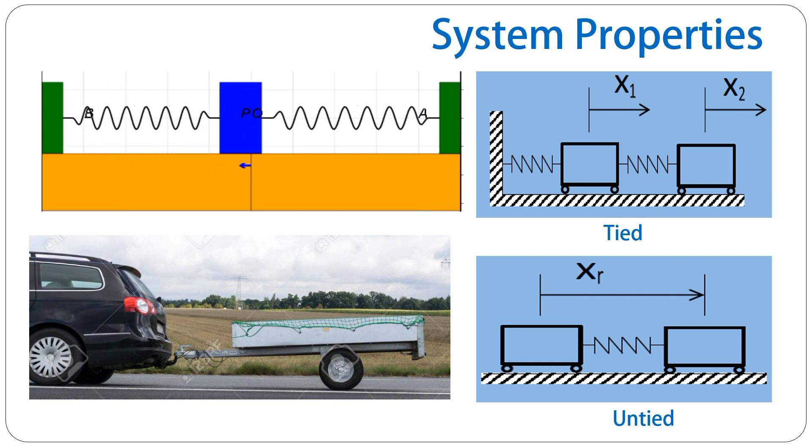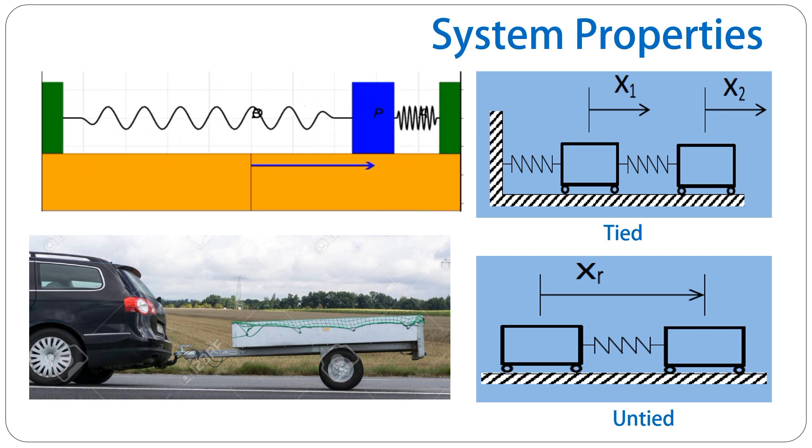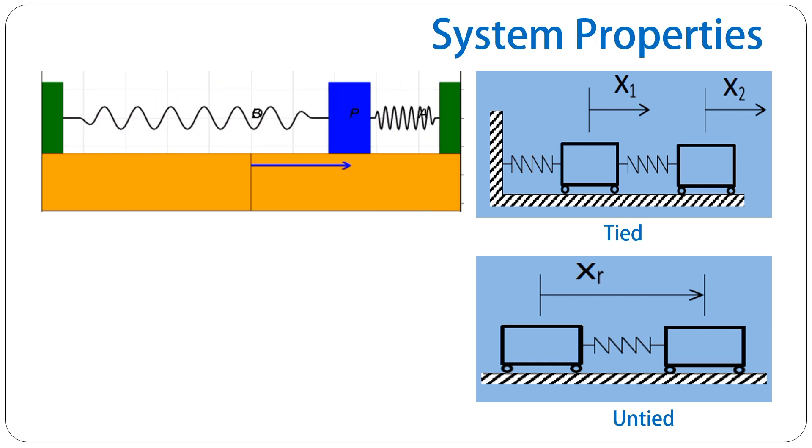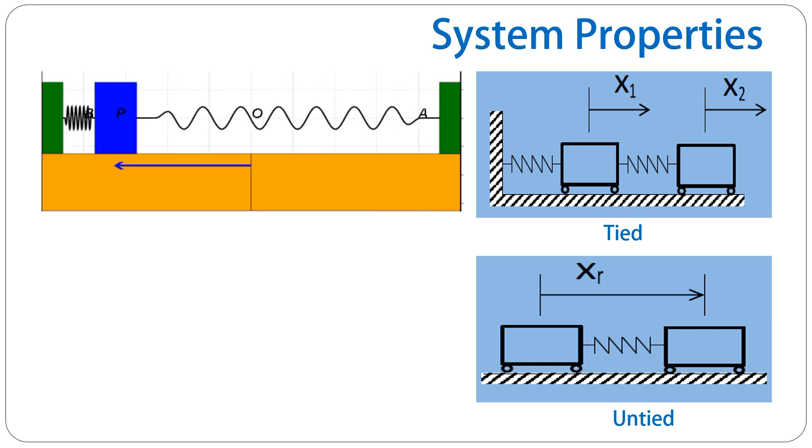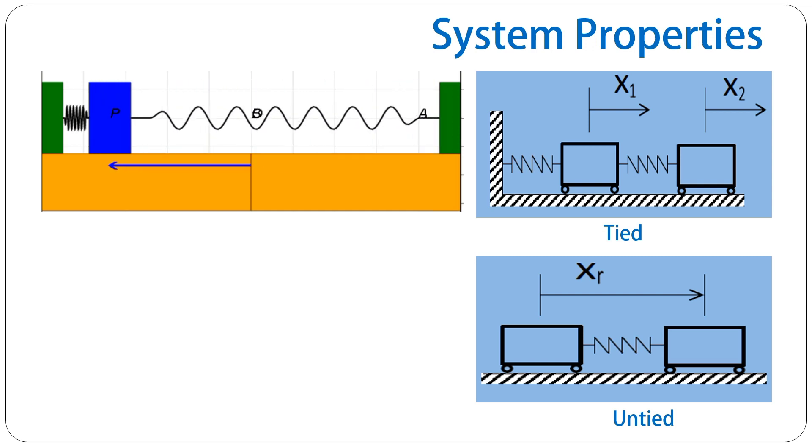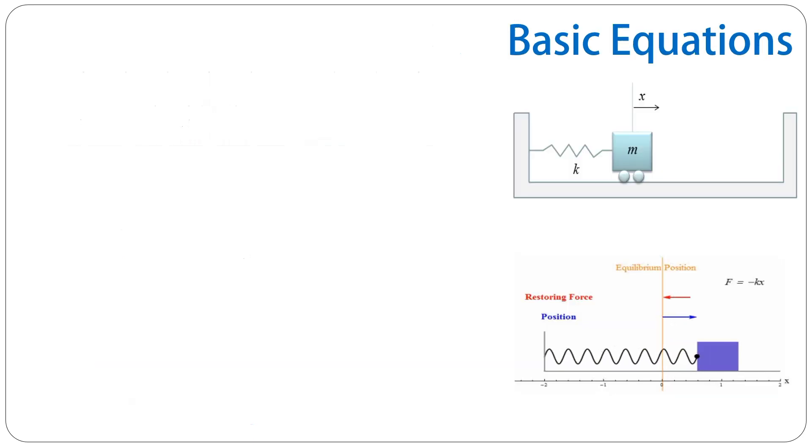And the example that you see here could be an example of a car which is towing a trailer, so this could be the trailer, and this could be the car that is towing the trailer. And then we have relative motion, just relative motion between the two masses. In this case, we have relative motion between these two masses, but also this mass must be shown as absolute motion.